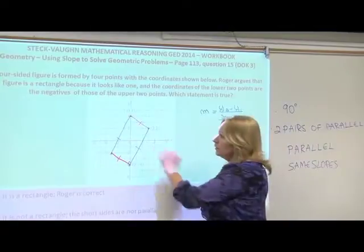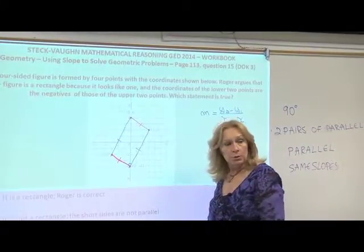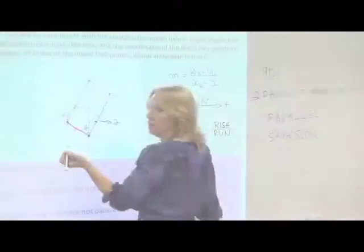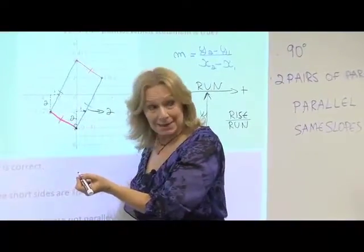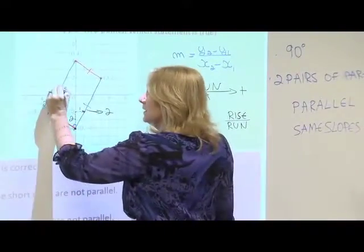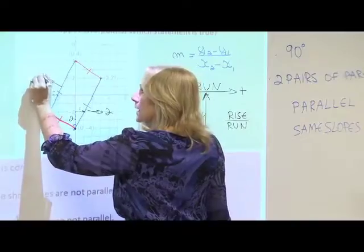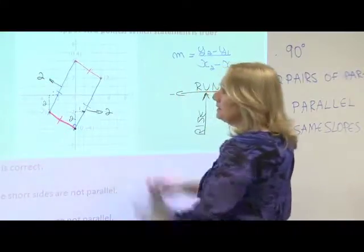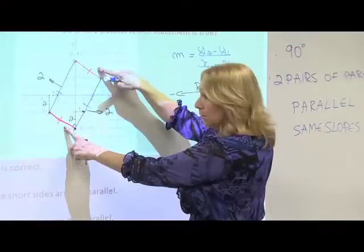So let's do the blue, the two blue lines first and find the rise and run. It's the same slope. So yes, they are parallel. They have the same slope, so they are parallel. Let's see if these two have the same slope.